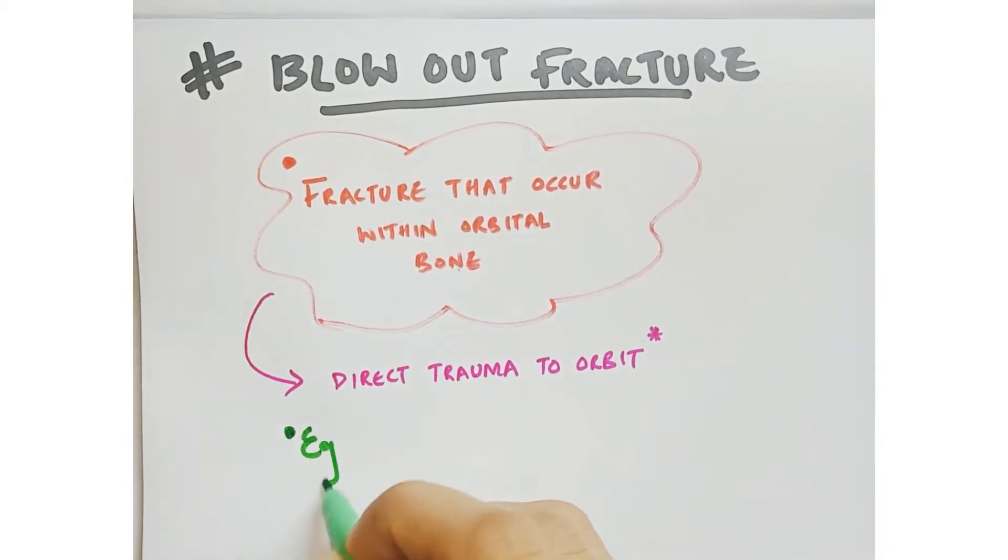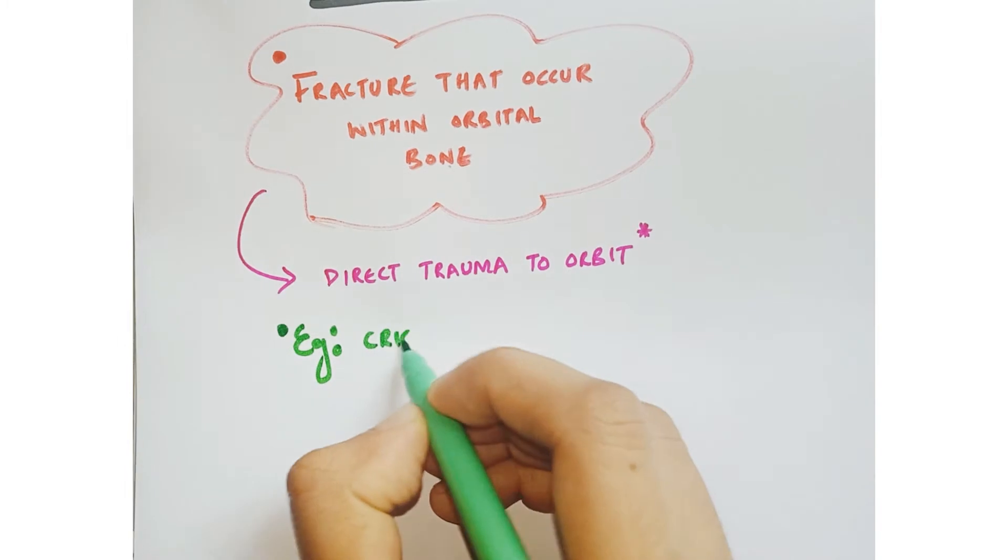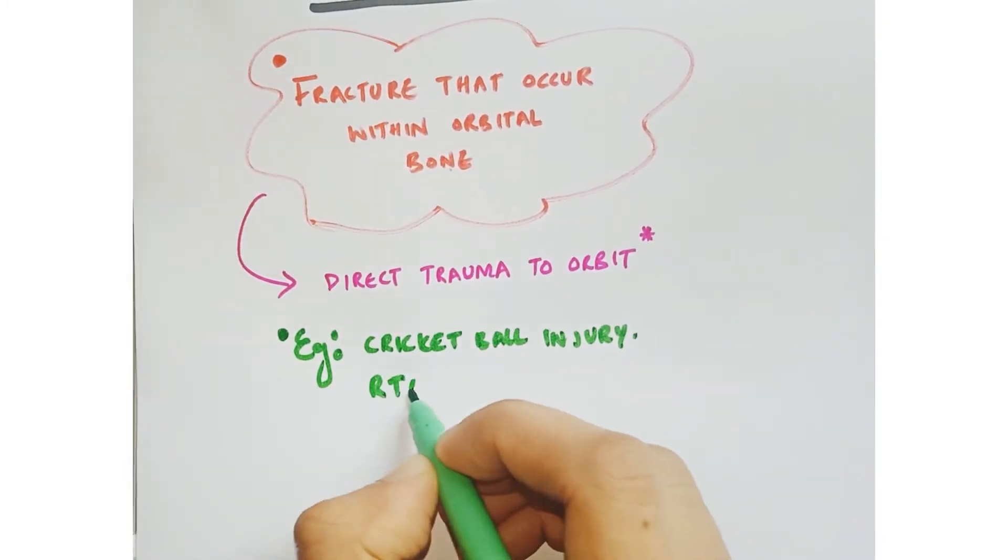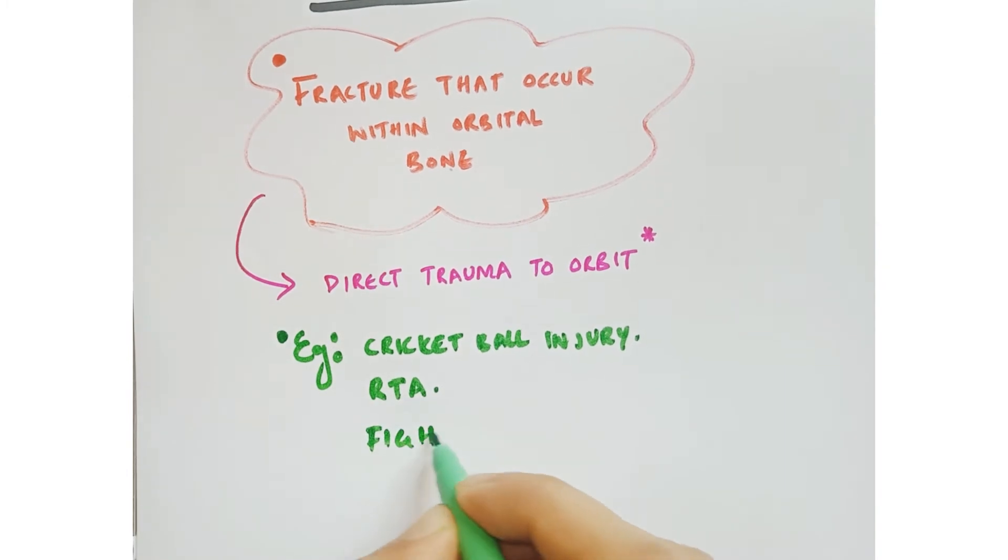Examples include cricket ball injury, road traffic accidents, or elbow or fist fights. The orbital wall helps to protect our eyes and hold them in position.